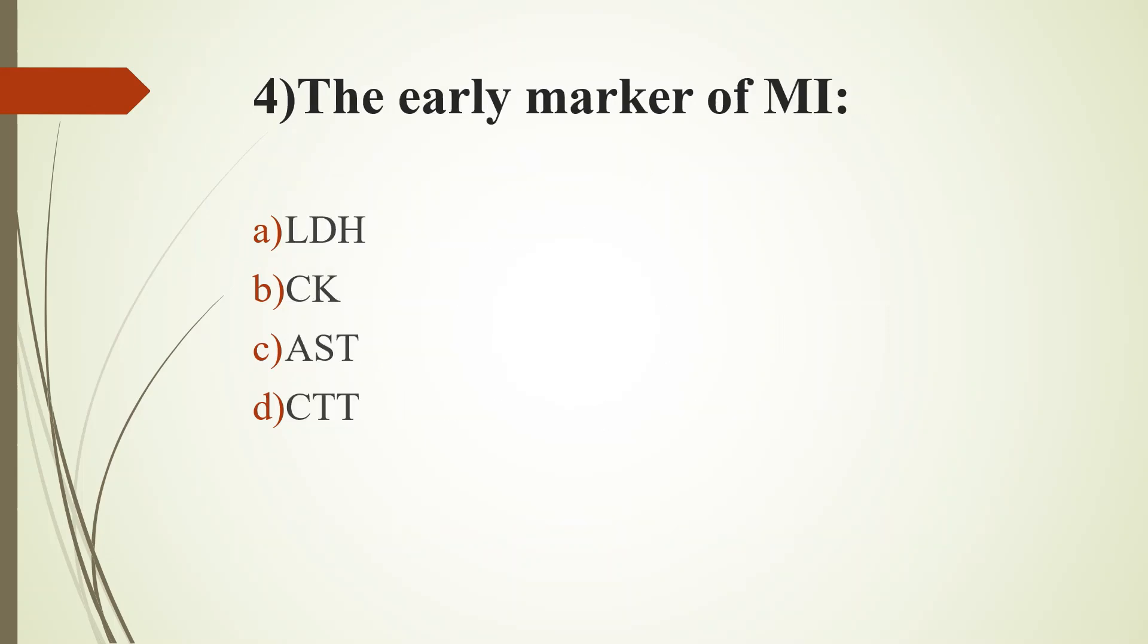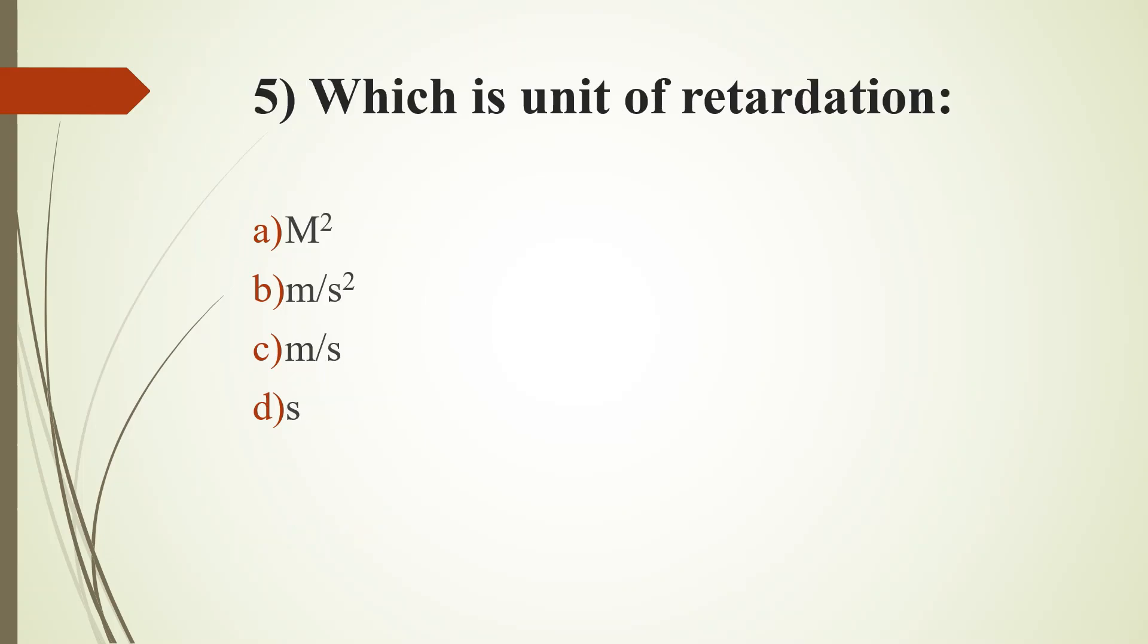Fourth question, the early marker of myocardial infarction: option A, LTH; option B, CK; option C, AST; option D, CTT. Answer is option D, CTT, that is cardiac troponin T. Second option, CK, that is creatine kinase. Fifth question, which is unit of retardation: option A, meter square; option B, meter per second square; option C, meter per second; option D, second. Answer is option B, meter per second square.